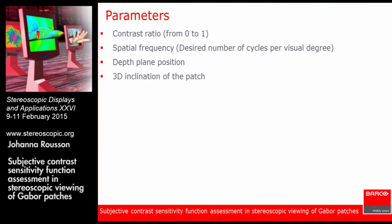During these experiments, a few parameters were changed. First, the contrast — to assess the CSF we need to find the contrast threshold, the contrast at which the observer can barely see or just cannot see the stimulus anymore. Also the spatial frequency was varied, since the contrast sensitivity function depends on it. To create 3D visualization conditions, we altered the depth plane position — the plane where the 2D Gabor patch was lying — and also applied 3D inclination.